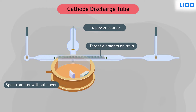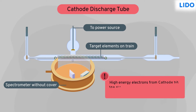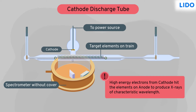On passing an electric current, the high-energy electrons emitted from the cathode hit the elements at the anode to produce X-rays of characteristic wavelength.